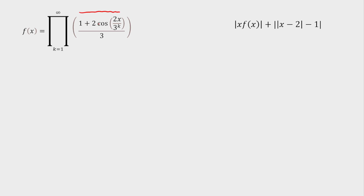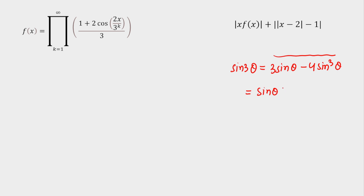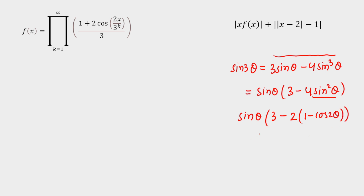Let's focus on the term 1 plus 2cos(2θ). I am starting with sin(3θ), which equals 3sinθ minus 4sin³θ. I will try to convert this expression into the form 1 plus 2cos(2θ). Taking sinθ common, the remaining factor is 3 minus 4sin²θ. From sin²θ, I can go in the direction of cos(2θ). So I can write this as sinθ multiplied by 3 minus 2(1 minus cos(2θ)), giving sinθ into (1 plus 2cos(2θ)).